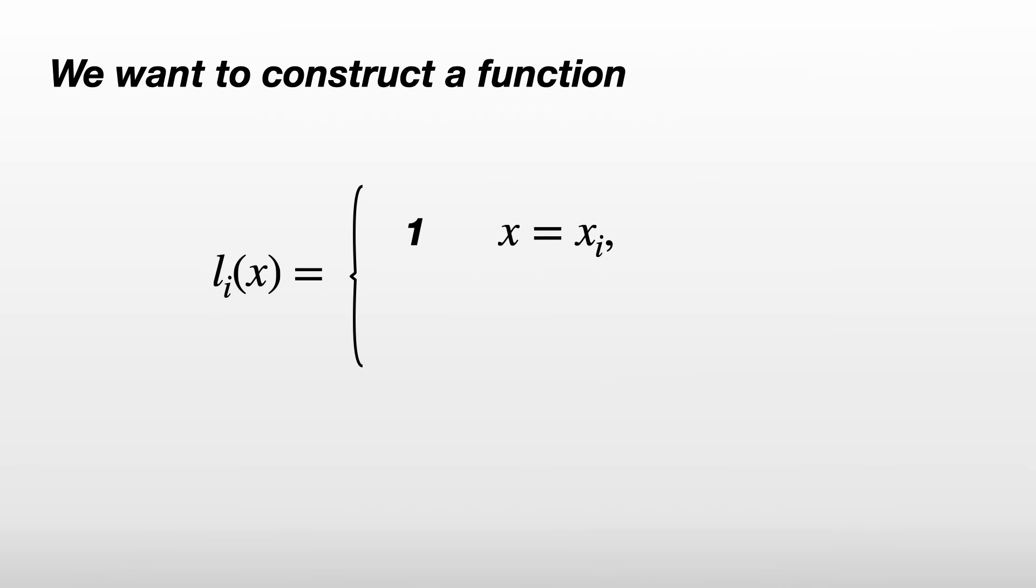So how do we find these Lagrange polynomials, the L_i's? We want to construct a function L_i(x) which is 1 at x equals x_i and 0 at all the other nodes x_j where j is not equal to i.